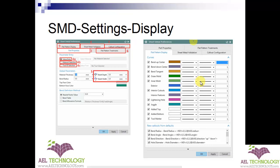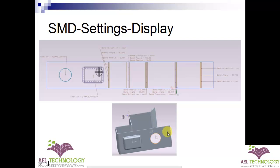Next is SMD setting display. This assigns a color to each type of bending parameter. Once you finish the product development and flatten it, the edges are displayed in the corresponding color based on the feature type. This example shows the designed part — when you do a flat pattern, the edges of all features are shown in different colors, indicating what type of feature each one is.